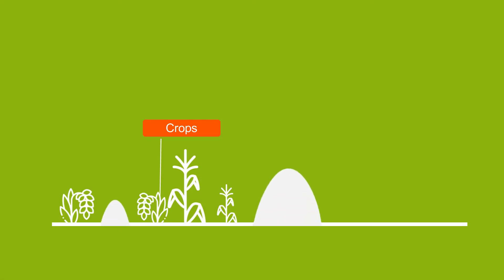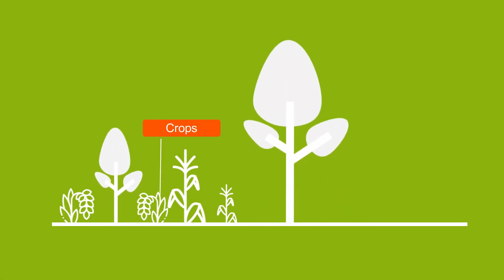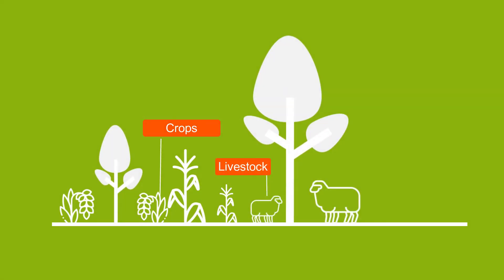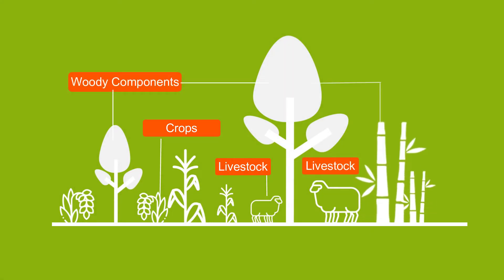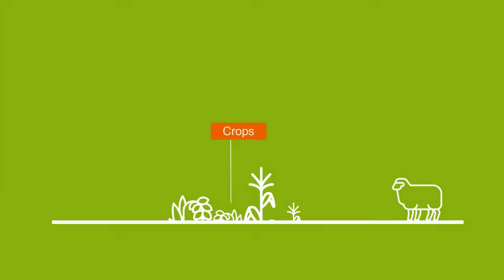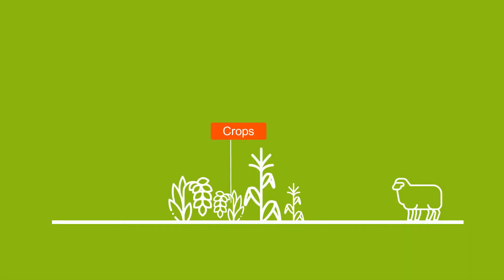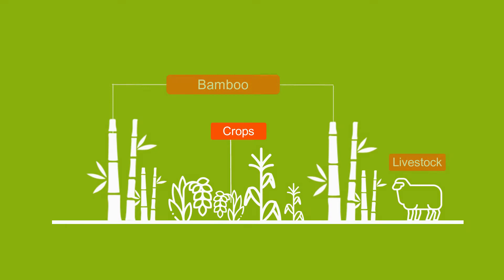Agroforestry is a combination of agricultural crops with a woody perennial component and livestock. The woody perennial component can be a tree, a shrub, or bamboo. So when we say bamboo agroforestry, it is a combination of bamboo as a woody perennial component with agricultural crops and/or livestock.